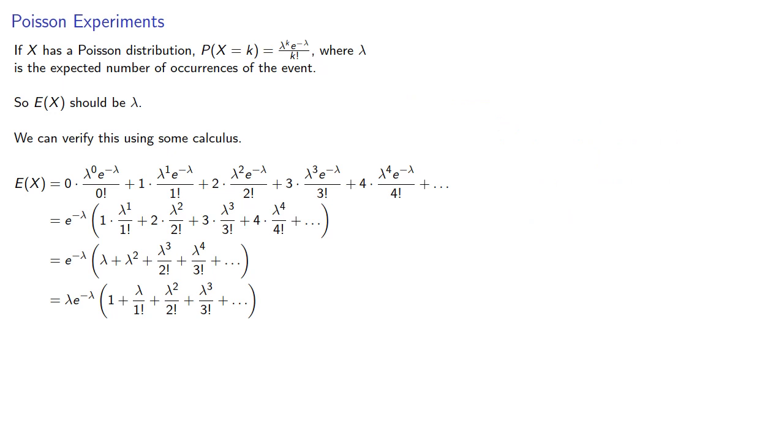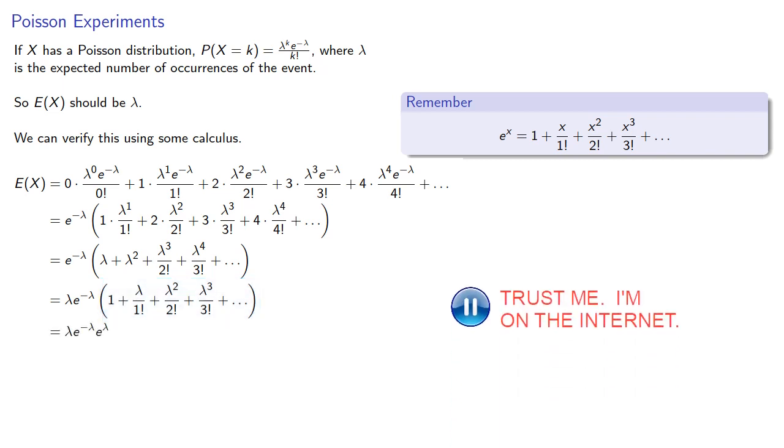And at this point it's rather unavoidable, we do have to introduce a little bit of calculus. Fortunately it's not that much, and if you haven't been introduced to this yet, it's not all that important for our purposes, but it's a matter of recognizing that the Taylor series for e to the power of x looks like this, and so the terms inside the parentheses can be simplified to e to the power of lambda. And we can simplify further to get lambda, our expected value, which is what we expected it should be.